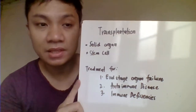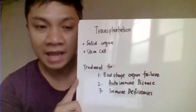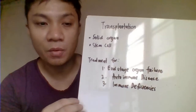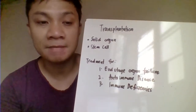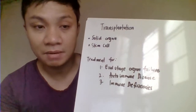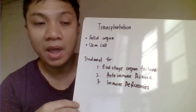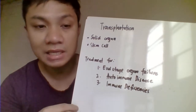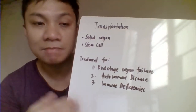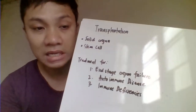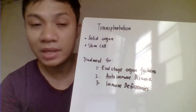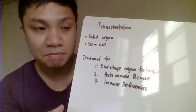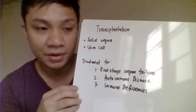Transplantation is done for several reasons. Number one, as a replacement for end-stage organ damage, wherein you don't have any option but to replace a damaged organ with an organ coming from a donor. The patient suffers from diseases wherein they are no longer able to respond to different treatments — antibiotic treatment, drug treatment, or other therapies — so you have no option but to transplant a healthy organ from the donor to the recipient.